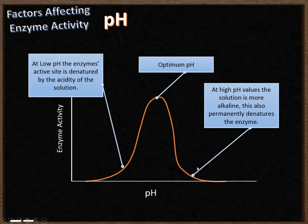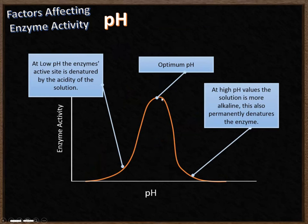The second factor is pH, which follows a very similar idea to temperature. Each enzyme has its own optimum pH — the best condition for it to work at. At lower, more acidic pHs, the acidity denatures the enzyme and changes the shape of the active site, so it doesn't work well. Similarly, as pH increases and becomes more alkaline, permanent denaturing occurs again. At extremes of pH — both high and low — the enzyme is denatured and doesn't work well. In the middle, there is an optimum pH around pH 7, though some enzymes have slightly lower or higher optima.